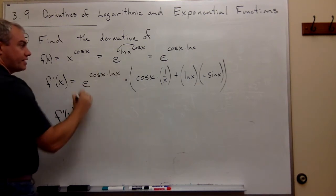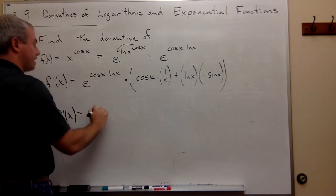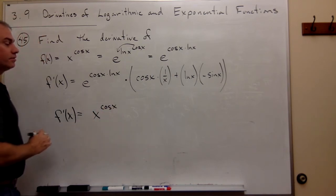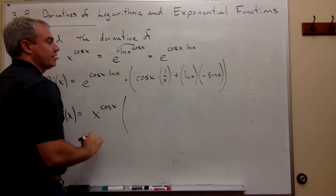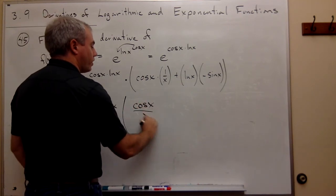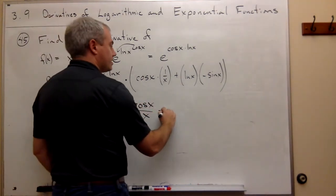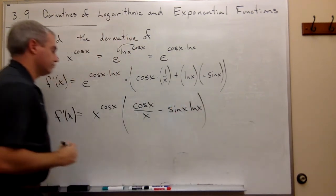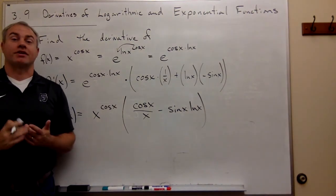So if I wanted to, instead of writing this guy, I could write that this is x to the cosine of x times, and if I wanted to clean this up a little bit, I guess I could write this as cosine x over x minus sine x ln of x. And that gets the job done as well.